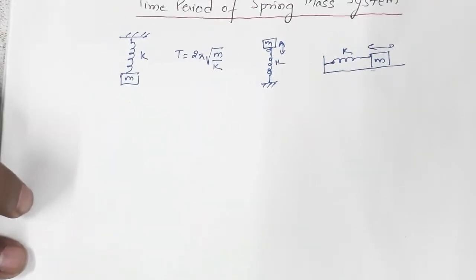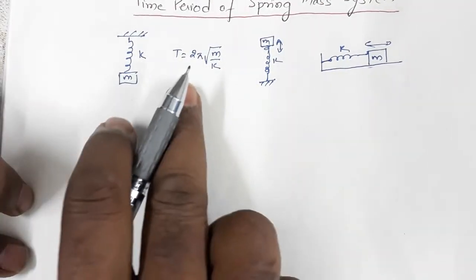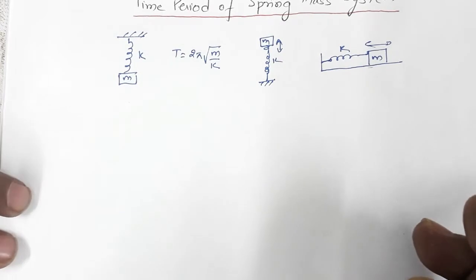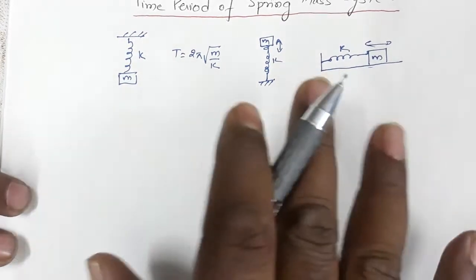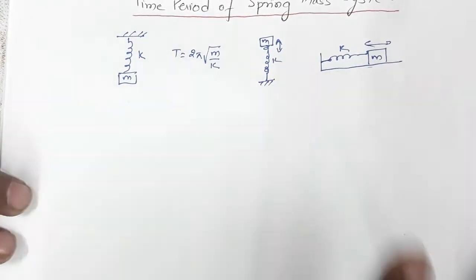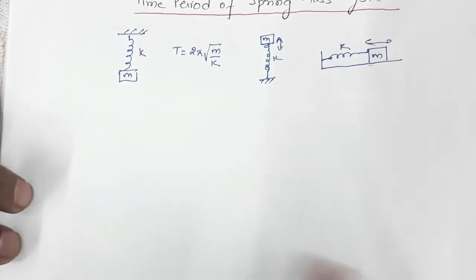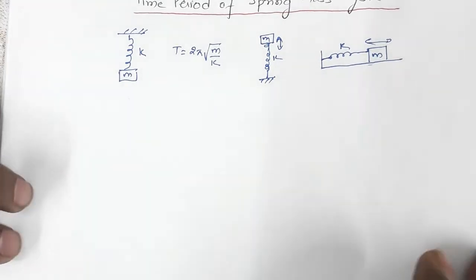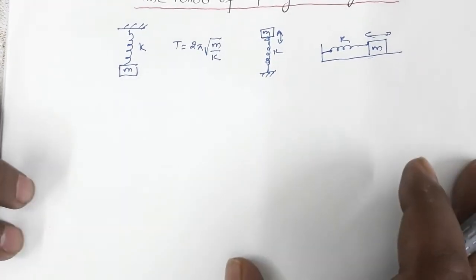For all such systems, this is the expression for the time period. I'm assuming you already know this. Now we are going to see a few more — somewhat more complicated — systems.